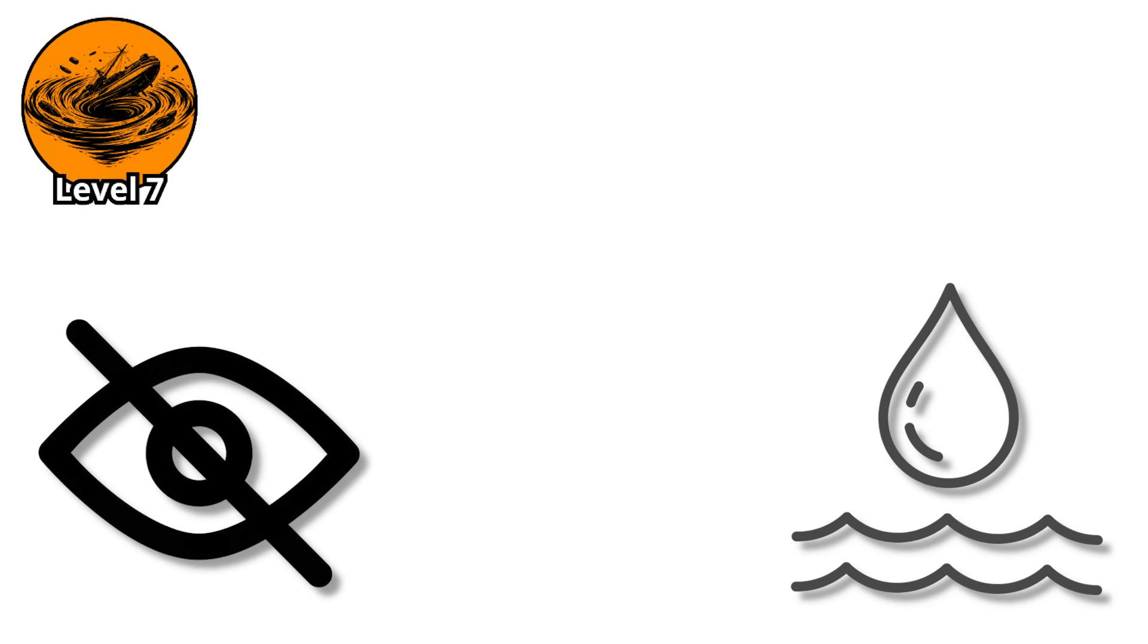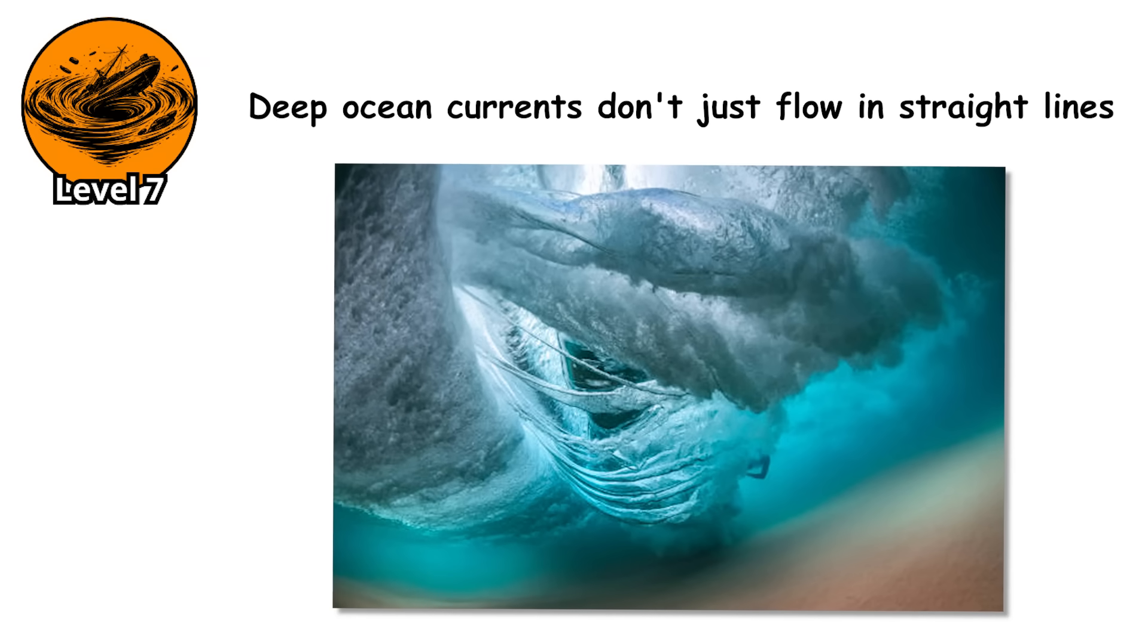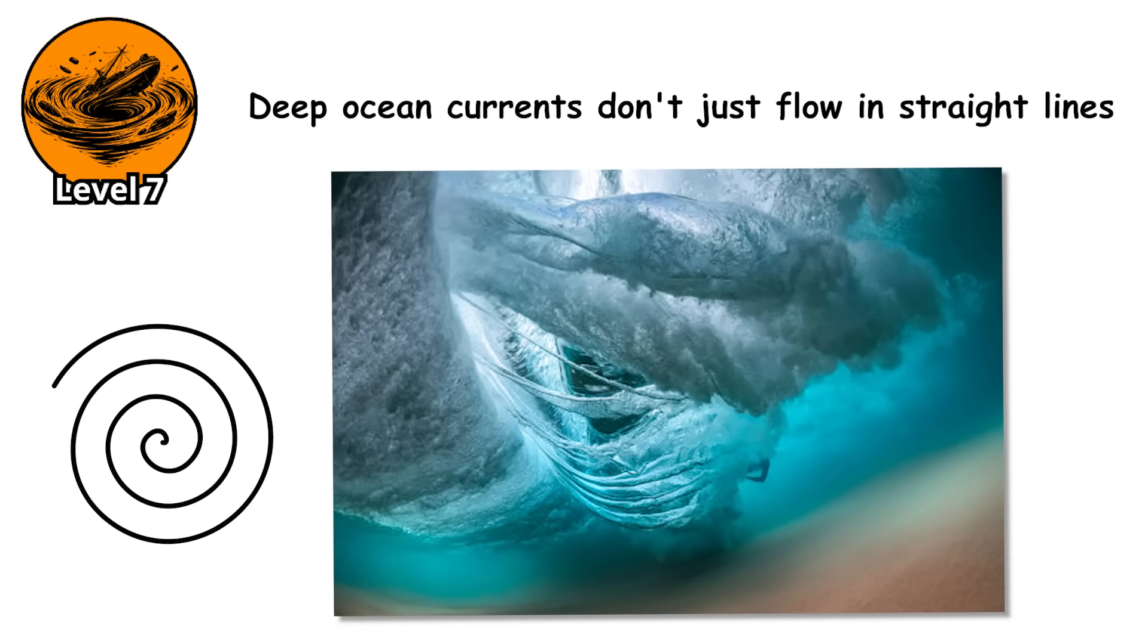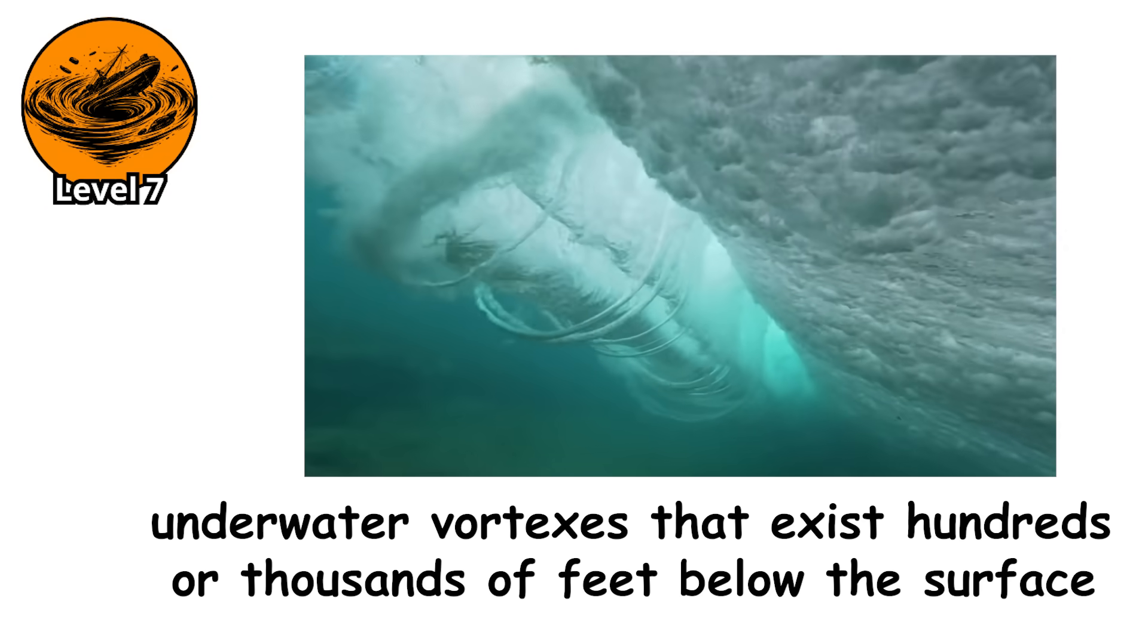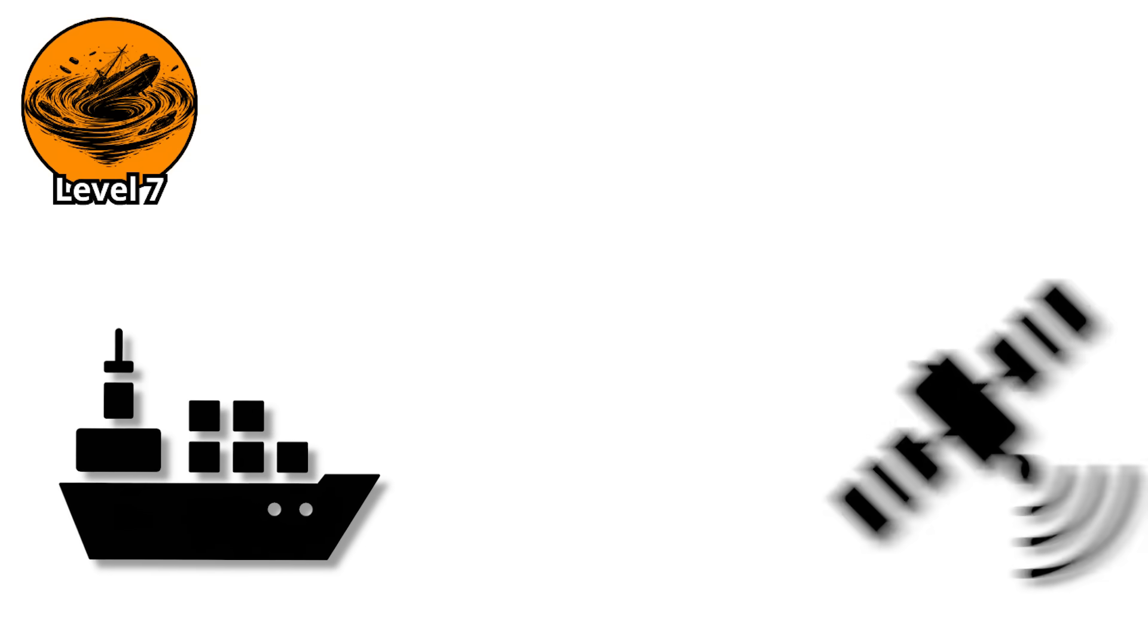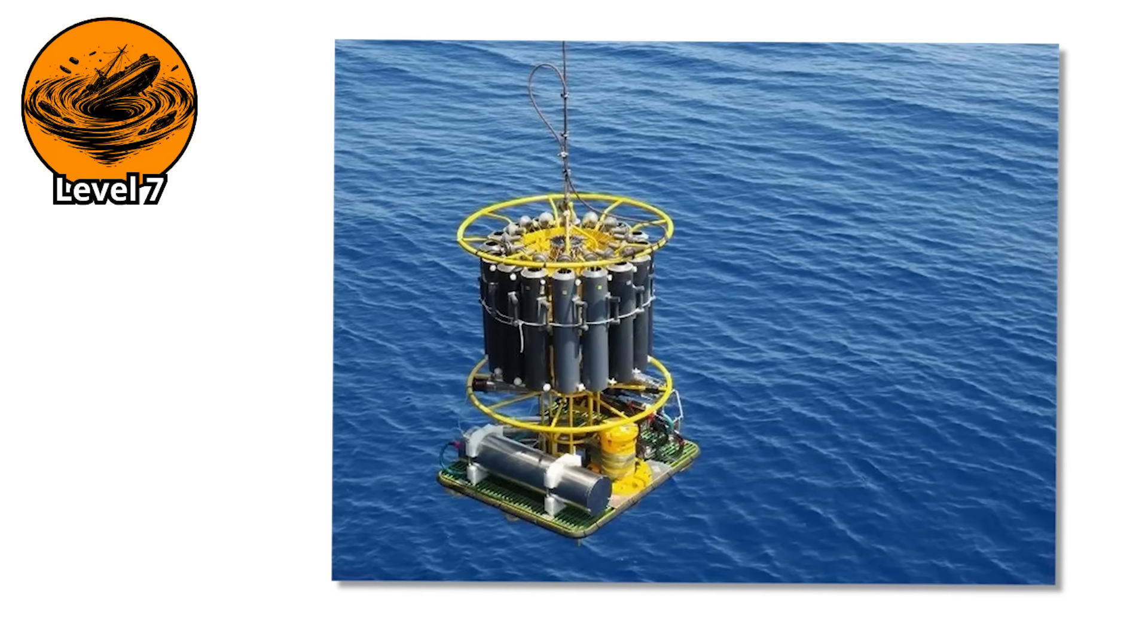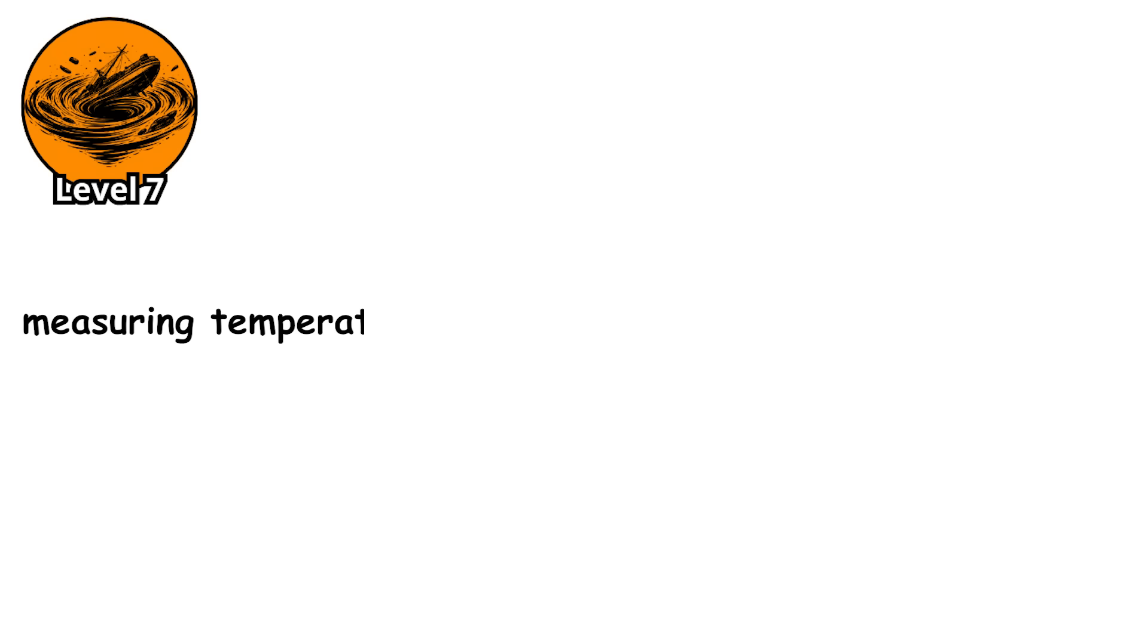You can't see them from the surface. That's what makes them so dangerous. Deep ocean currents don't just flow in straight lines. They spiral, twist, and sometimes form underwater vortexes that exist hundreds or thousands of feet below the surface. These aren't visible to ships, satellites, or aircraft. They're only detectable through specialized oceanographic equipment, measuring temperature, salinity, and current speed at depth.